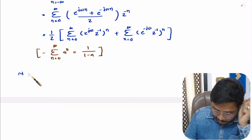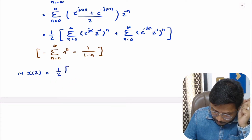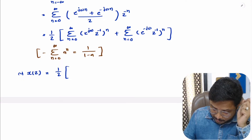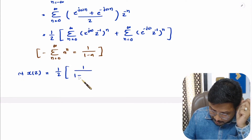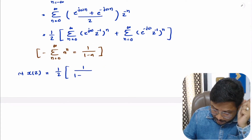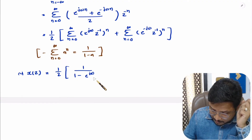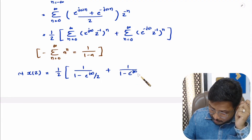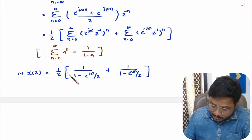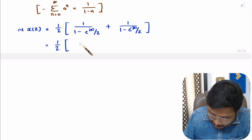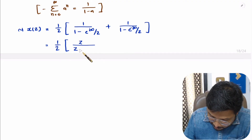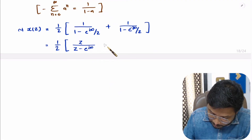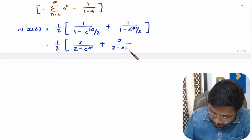So now X of Z equals one half of: applying the geometric sum formula to the first term gives 1 divided by 1 minus e to the power jω divided by Z; and applying the same to the second term gives 1 divided by 1 minus e to the power minus jω divided by Z. Now I need to simplify this. Taking Z as LCM, the numerator will have Z, and the denominator will have Z minus e to the power jω for the first term, and Z minus e to the power minus jω for the second.